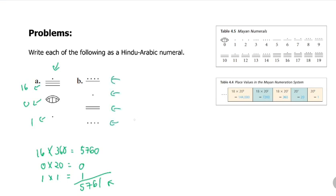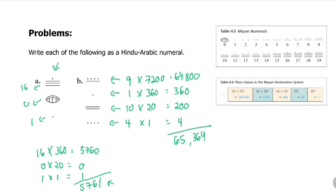Now in the case of letter B, this is 4 dots, so that's 4, 2 bars is 10, 1 dot is 1, and a bar and 4 dots, 5 plus 4, that's 9. The 4 we have to multiply by 1, the 10 we have to multiply by 20, the 1 we have to multiply by 360, the 9 we have to multiply by 7,200. So 4, this one is 200, this one is 360, 9 times 7,200 is 64,800. If this is added together, we have 65,364 as our Hindu-Arabic equivalent of this Mayan numeral.